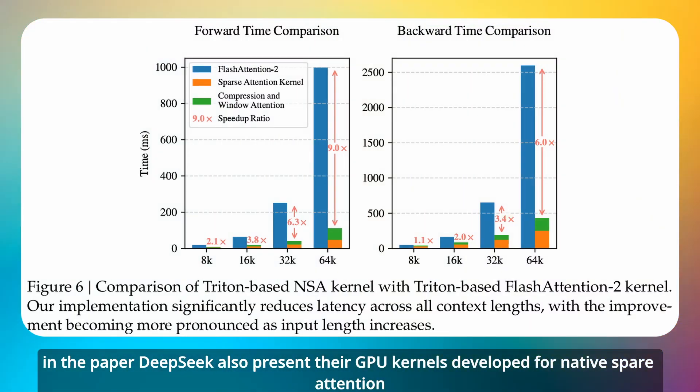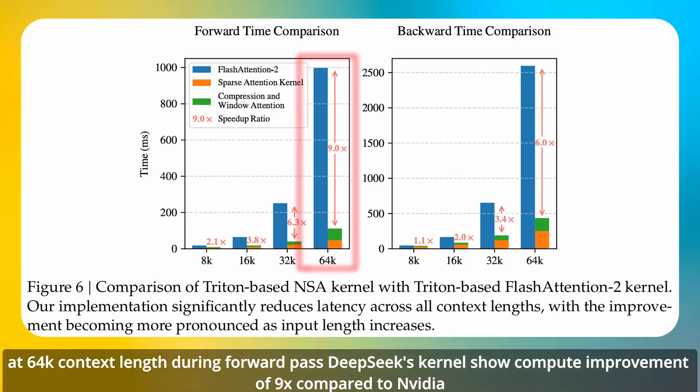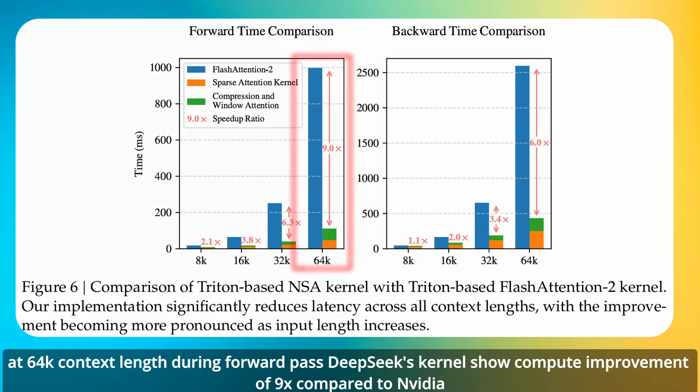In the paper, DeepSeq also presents their GPU kernels developed for native sparse attention. The chart compares new kernels with NVIDIA's Flash Attention 2, and the improvement is more pronounced as the context length increases. At 64k context length, during forward pass, DeepSeq's kernels show compute improvement of 9x compared to NVIDIA.